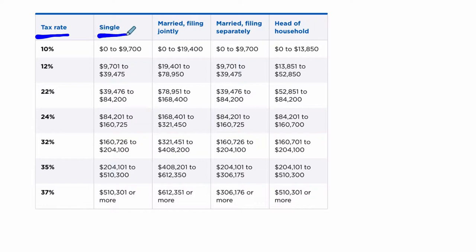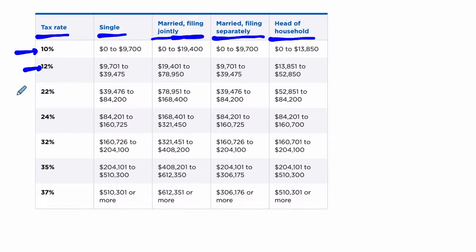Are you single? Are you married filing your taxes together? Are you married filing your taxes separately, or are you classifying yourself as head of household? That's a lot to think about. And on top of that, there are all these different tax rates: 10%, 12%, and so on, all the way up to 37%.